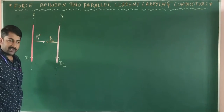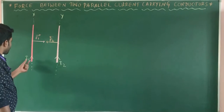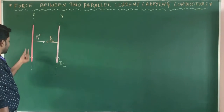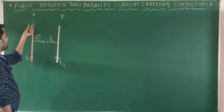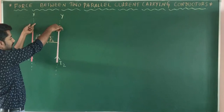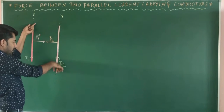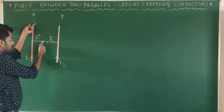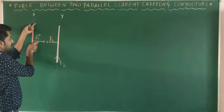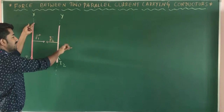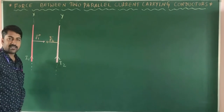Suppose in conductor X the current is moving in one direction and in conductor Y the current is moving in the opposite direction. Then force F1 is directed away from conductor Y, and F2 is directed away from conductor X — meaning the conductors repel each other when currents flow in opposite directions.